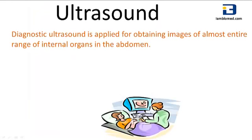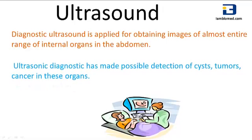Diagnostic ultrasound is applied for obtaining images of almost the entire range of internal organs in the abdomen, like kidney, liver, pancreas, major blood vessels, and fetus during pregnancy. The ultrasonic diagnostic has made possible the detection of cysts, tumours, and cancer in these organs.